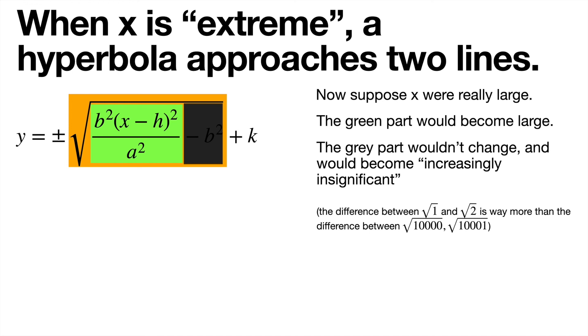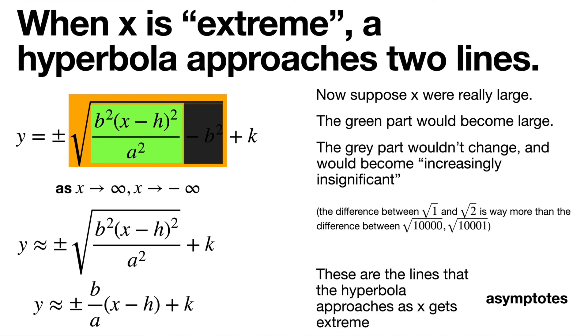Now, this square root expression can be simplified because it's just the square root of a bunch of squares. And so the hyperbola is going to be close to the square root of that expression, which is plus or minus b over a times x minus h plus k. So in other words, we got the equation of a line. These are the lines that the hyperbola approaches as x gets extreme. And these lines are called asymptotes.